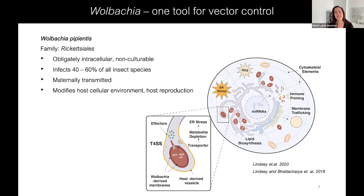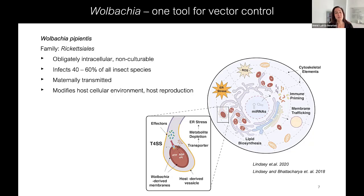In order to just exist as an intracellular entity in a host cell, Wolbachia have to modify all sorts of host cellular processes. Having a bacterium living inside of a eukaryotic cell is not normal, and so Wolbachia uses its type 4 secretion system and its secreted proteins to sculpt the cellular environment in order to persist, replicate, and be maternally transmitted. These modifications include inducing ER stress and reactive oxygen species production, priming the immune system, altering the cytoskeleton and membrane trafficking, as well as lipid biosynthesis.